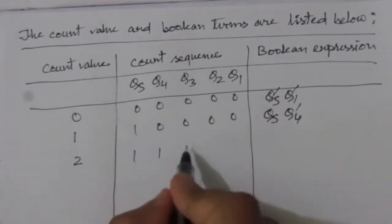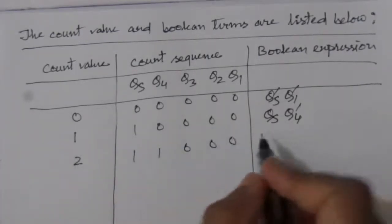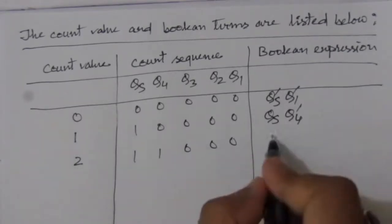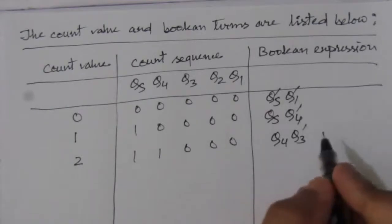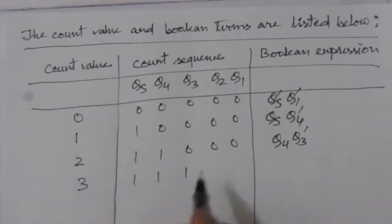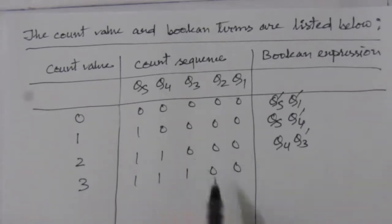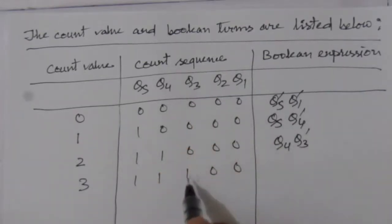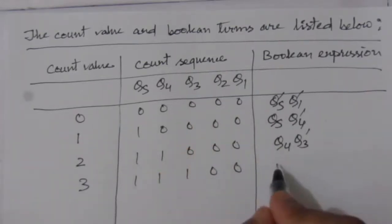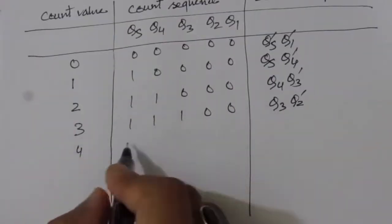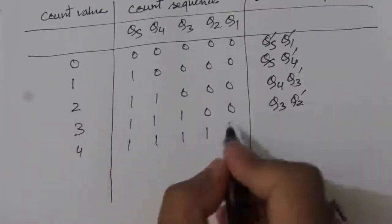For count 2: sequence is 11000, look at the adjacent transition Q4=1 and Q3=0, giving Q4 · Q3̄. For count 3: sequence is 11100, the adjacent transition is Q3=1 and Q2=0, giving Q3 · Q2̄. For count 4: sequence is 11110, the adjacent transition is Q2=1 and Q1=0, giving Q2 · Q1̄.